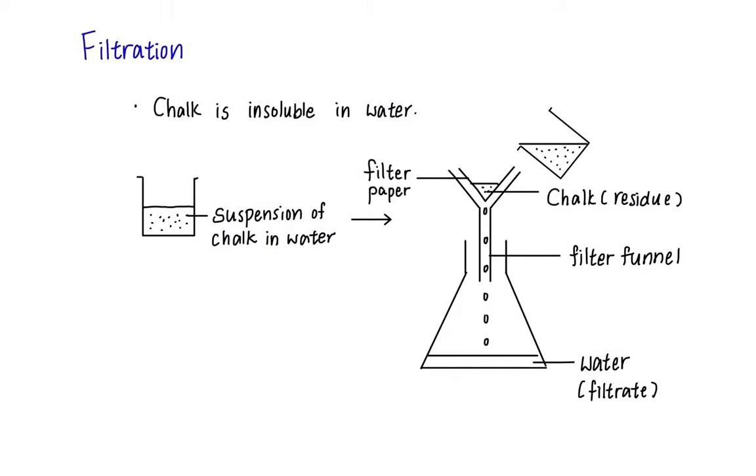The simplest of all, filtration. If we have an insoluble substance in a solution, for example, a chalk water, we can easily separate them by passing through a filter paper on the filter funnel placed above a flask. The filter paper will prevent the chalk from penetrating it through but water will be able to drip through the funnel and collect in the flask. The chalk is called a residue and water as the filtrate.